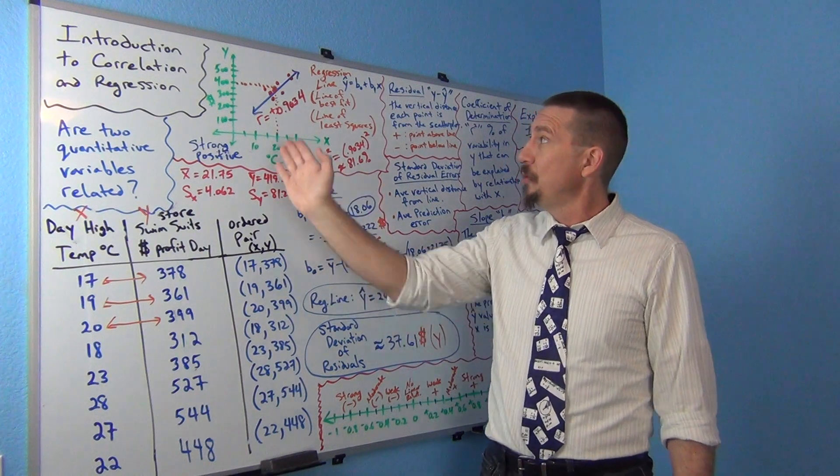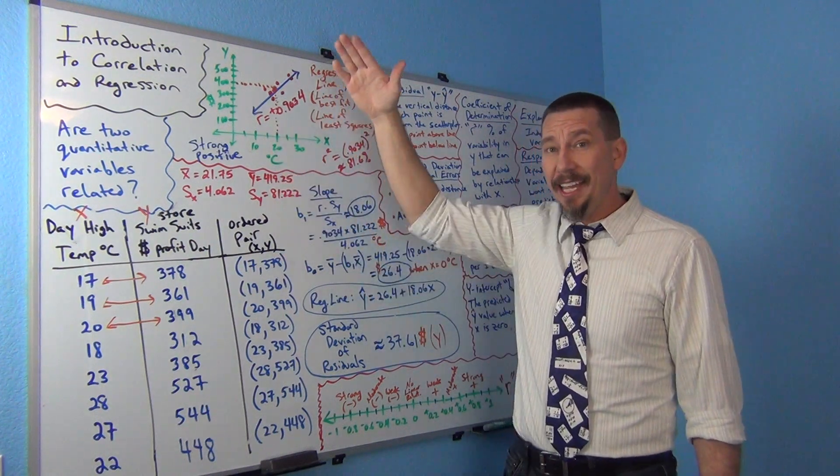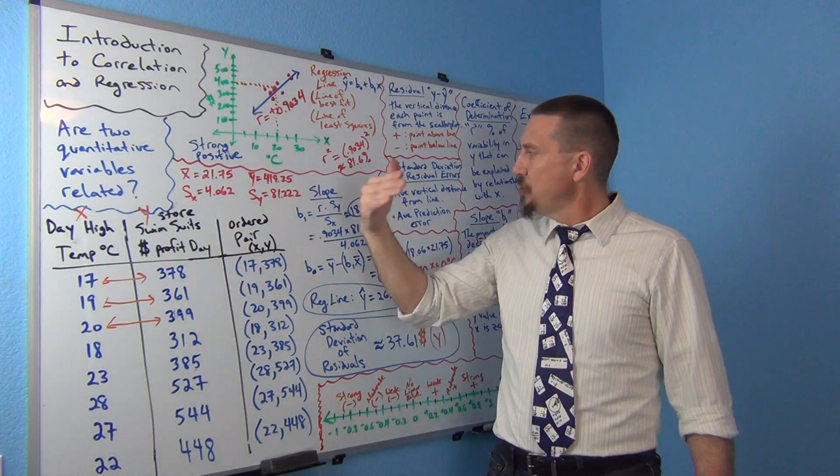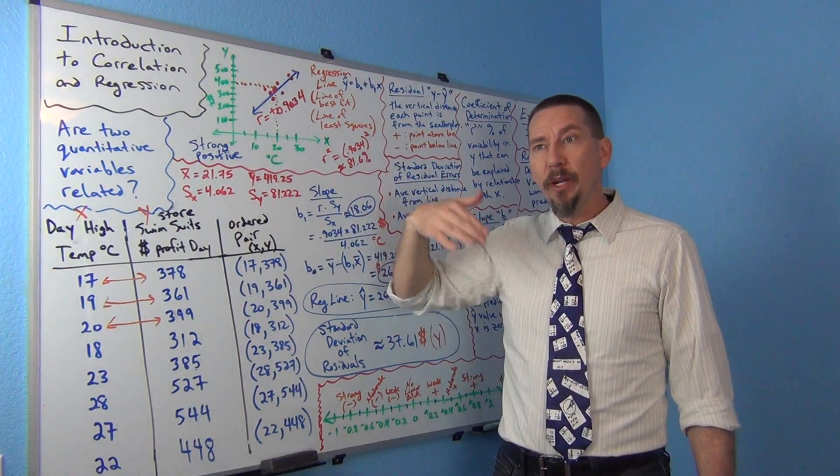This r value, the correlation coefficient is sort of the part of the formula that makes this work. Remember, when r is positive, the slope, the line will go up. When the r is negative, the line will go down. So that's what gives us the positive and negative. And it also measures in terms of how far our points are from the line.